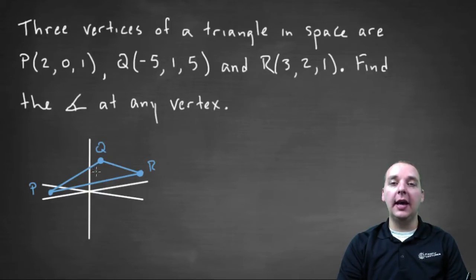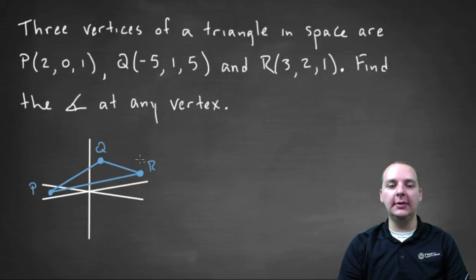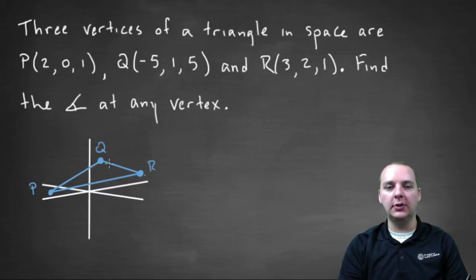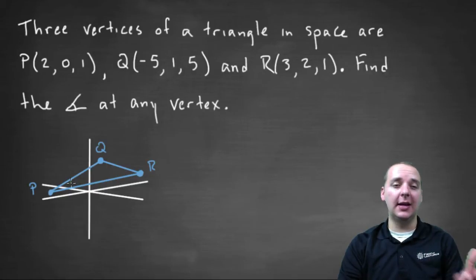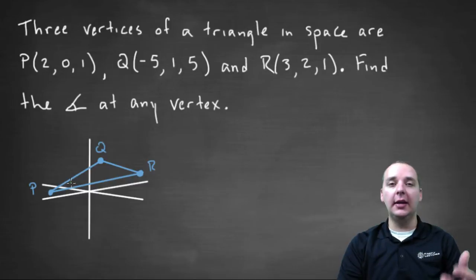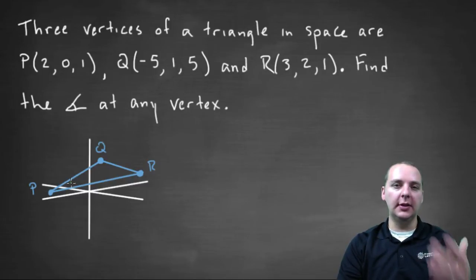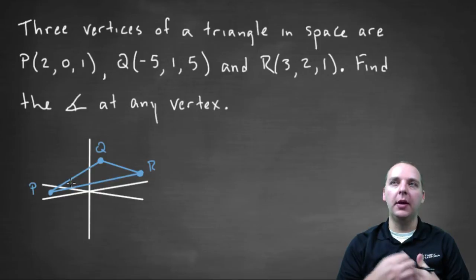The exercise will ask us to find one of the angles at any of these three vertices — either vertex P, vertex Q, or vertex R. So how are we going to do this and how do dot products come into play, because I don't even see any vectors here to take a dot product? Here's the thought process behind how we're going to solve this problem.